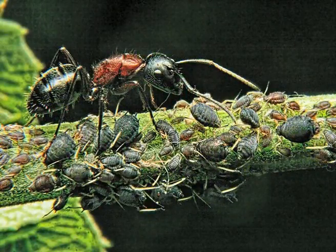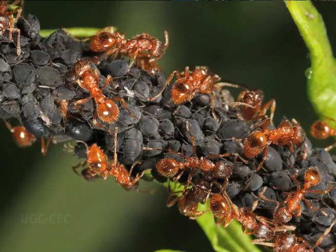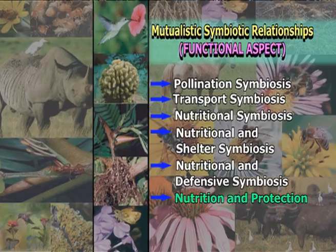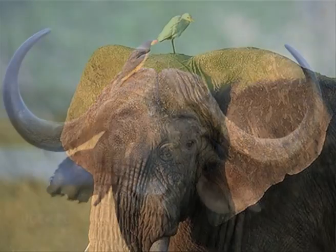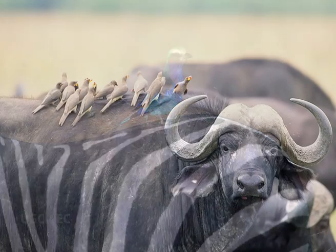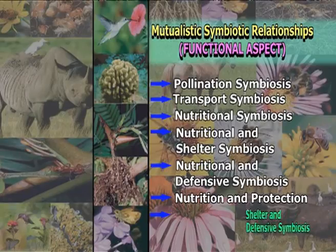Swollen-thorn acacias maintain year-round leaf production even in the dry season to provide food for the ants. The acacia ants continually patrol the leaves and branches and immediately attack any herbivore that attempts to eat acacia leaves or bark. Some species of ants that inhabit acacia thorns are obligate acacia ants and live nowhere else. Another example of mutualism is found between aphids and ants: ants feed on the sugary fluid released by aphids, while the aphids are protected by the ants.